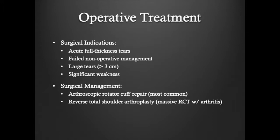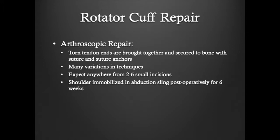In an arthroscopic rotator cuff repair, torn tendon ends are brought together and secured to the bone with a suture and suture anchors. Although there are many variations in techniques, all techniques aim to restore the anatomic footprint of the rotator cuff.